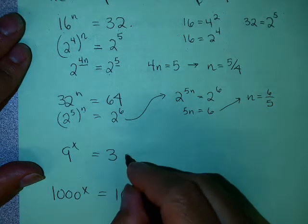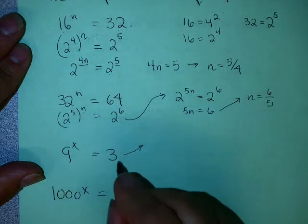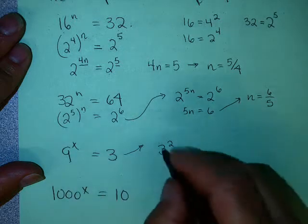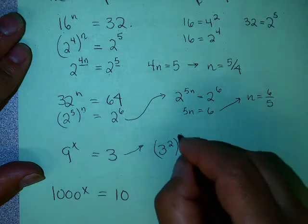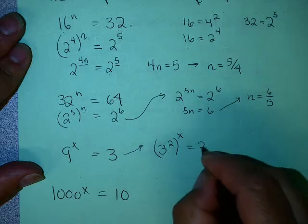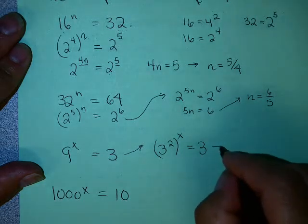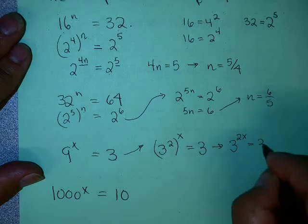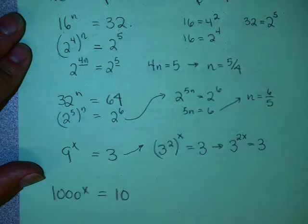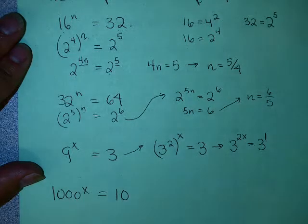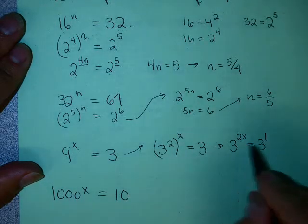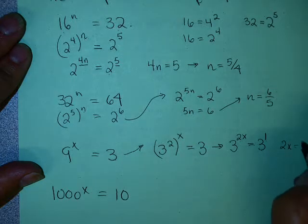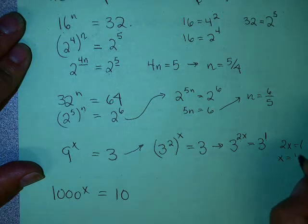Is 9 a power of 3? Yes, it's 3 squared. So I'm going to write 9 as 3 squared, and 9 to the x is 3 squared to the x, which equals 3. Using the rules of exponents, that gives you 3 to the 2x equals 3. Remember, I have the first power on the right side. Since I have the same base, the exponents must be equal: 2x must equal 1, so x must equal 1 half.